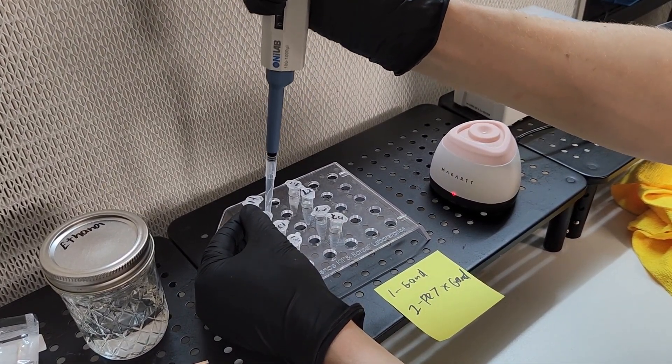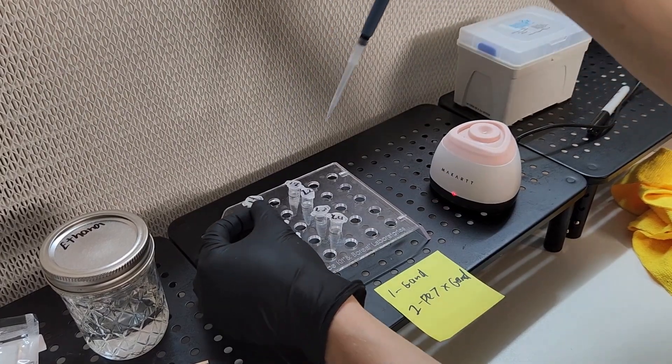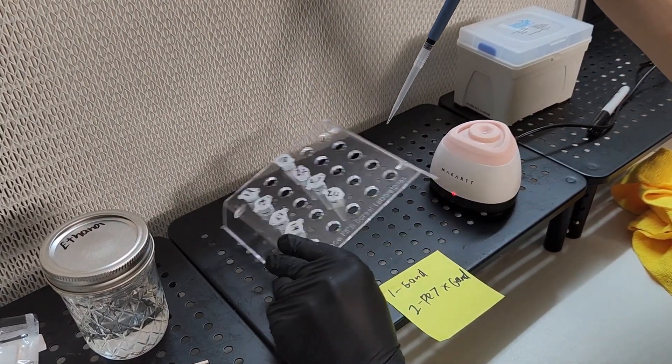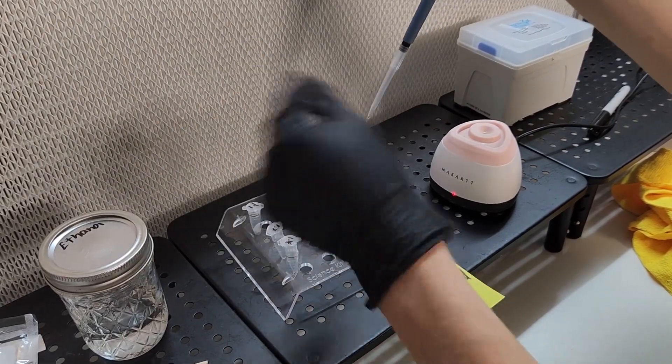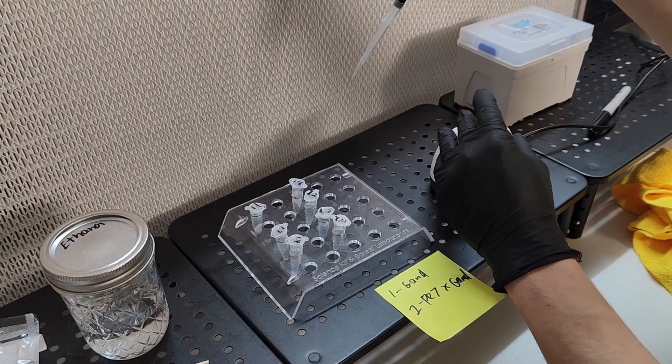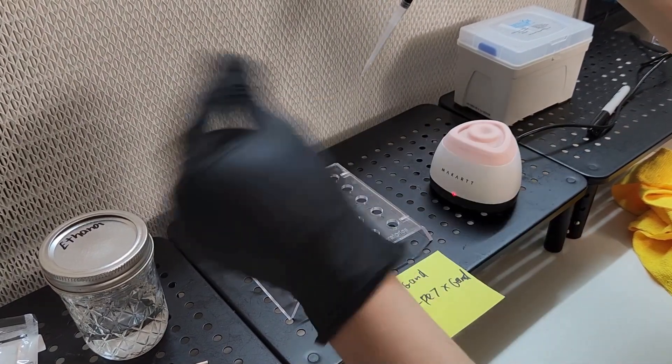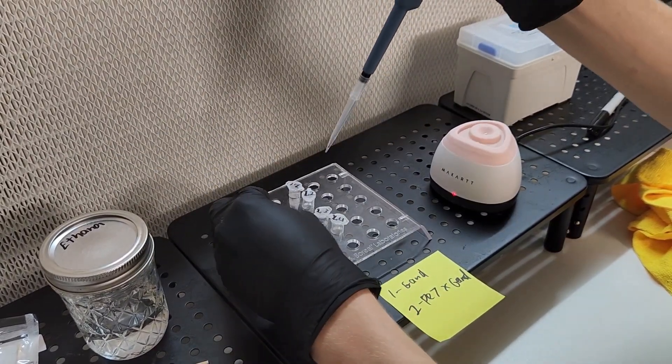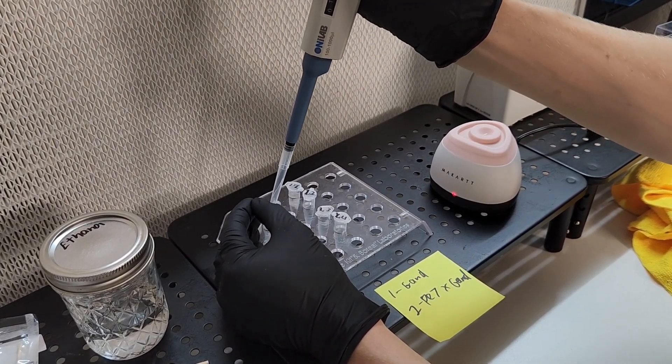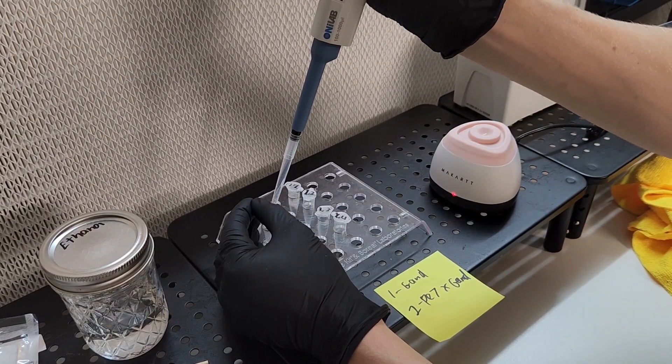Continue to do these last steps for each subsequent dilution rate. Each time you are putting 0.1 milliliters of the previous tube into 0.9 milliliters of the next tube you are going to be diluting each tube by 10 times. So your first tube is 10 times diluted, your second tube is 100 times diluted, your third is 1,000 and your fourth is 10,000.